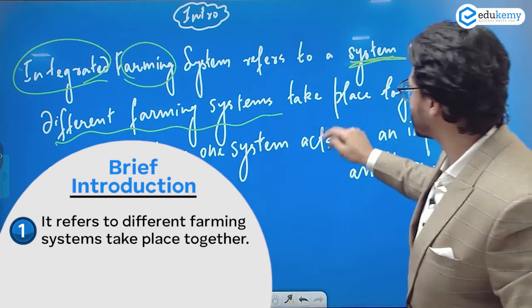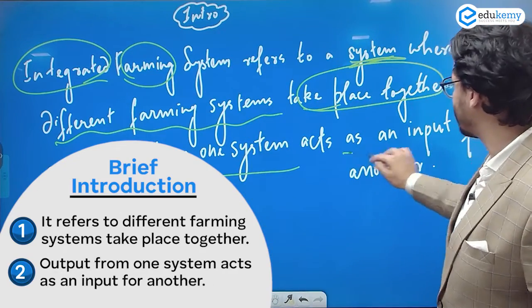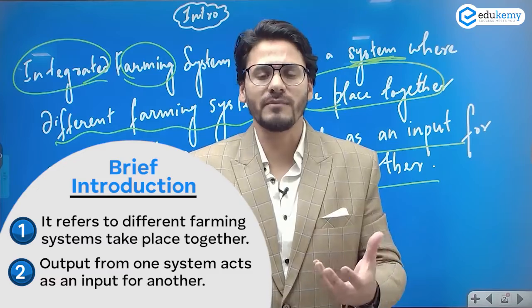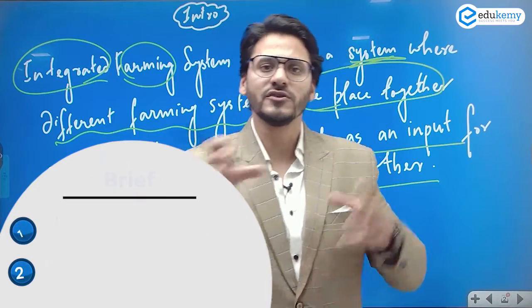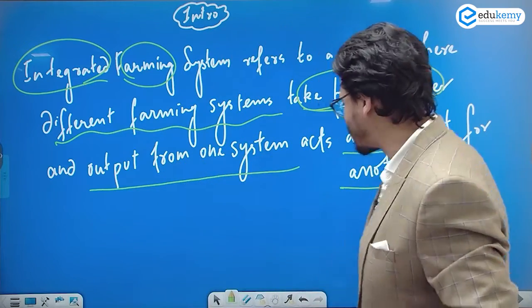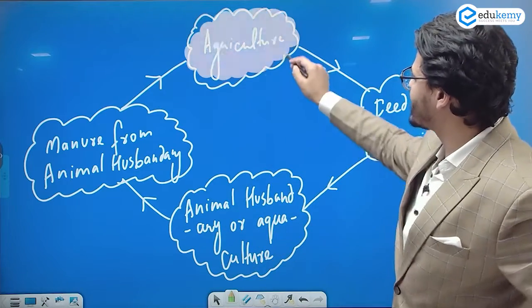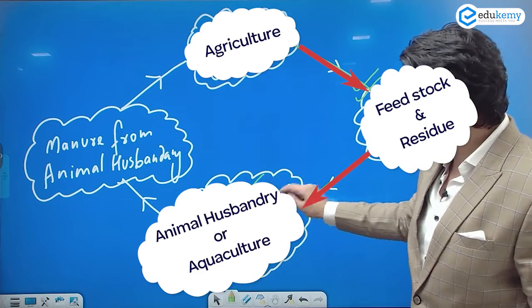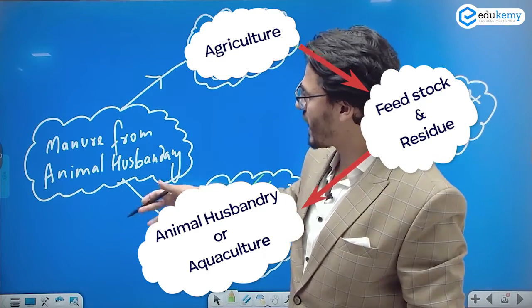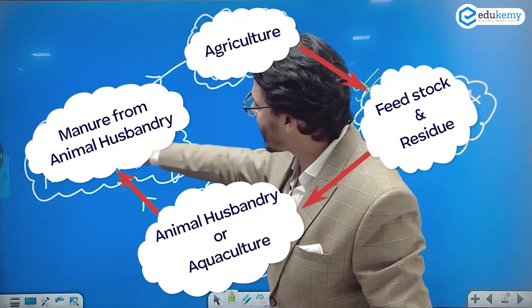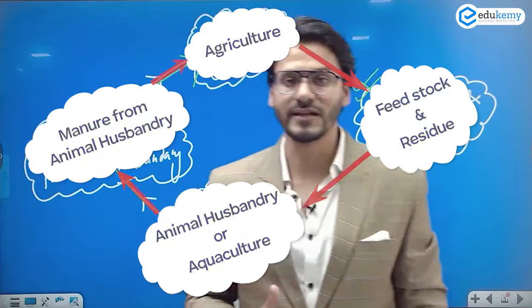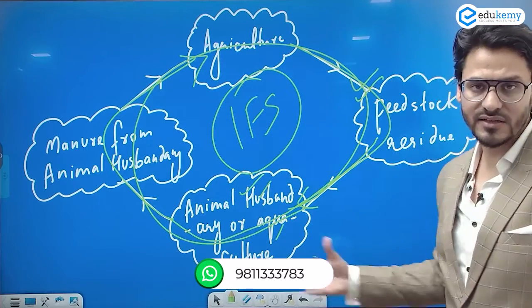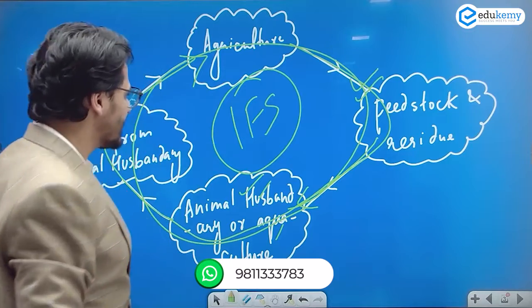It refers to a system where different farming systems take place together, and the output from one system acts as an input for another. For example, from agriculture, the feed stock and residue can be given to animal husbandry and aquaculture. The manure from animal husbandry can then act as fertilizer for the agricultural sector — creating an integrated farming system.